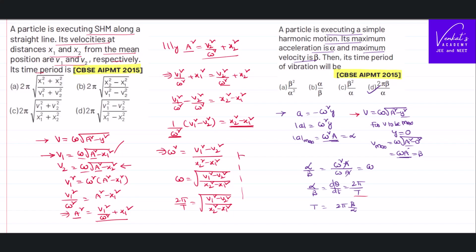The time period is T = 2π·√((x2² − x1²)/(v1² − v2²)). Option B is the answer. Both problems depend on the basic concepts of oscillatory motion — once you know the formulas, solving them becomes quite easy. That's it, and thank you for watching.